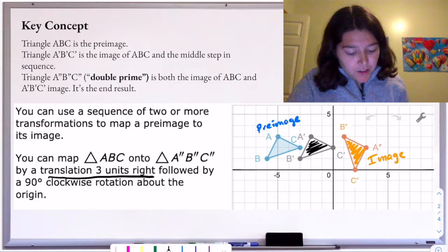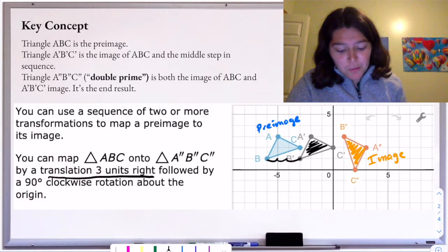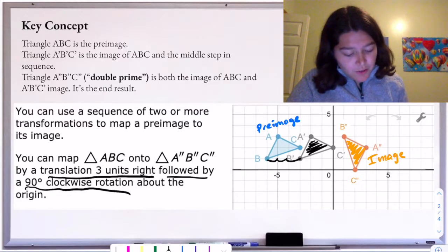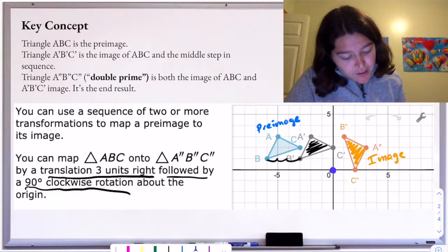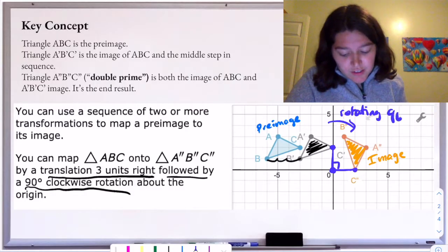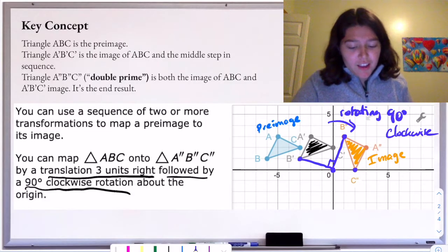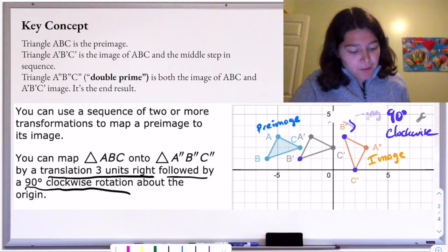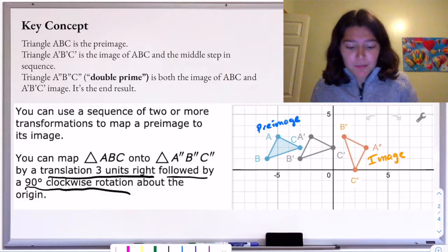Here you'll see we have triangle A prime, B prime, and C prime. This is like a middle step. It's going to take two transformations to get from our pre-image in blue to our orange image. We've taken our pre-image ABC, gone right three units, and we get triangle A prime, B prime, and C prime. Then secondly — notice the order — a 90 degree clockwise rotation about the origin. I have my origin, here's C prime and here's C double prime. That makes a 90 degree angle, so we are rotating 90 degrees clockwise. So there were two steps: first we had to translate, then we had to rotate, and that is how we get from our original shape ABC to our final image A double prime, B double prime, and C double prime.